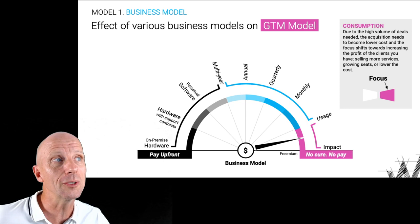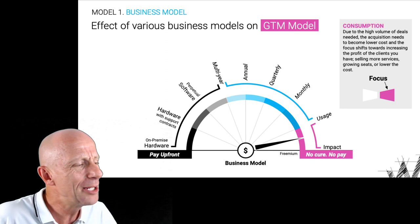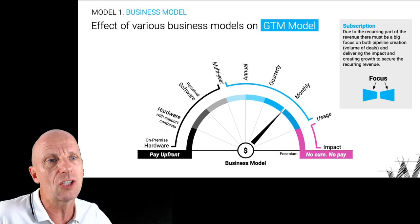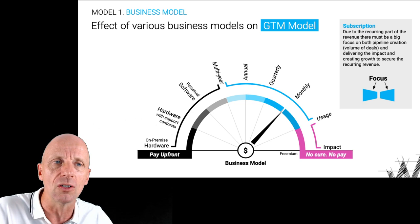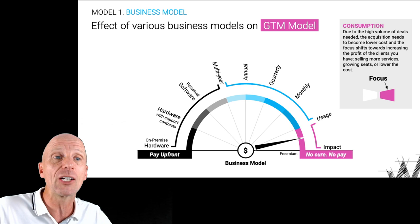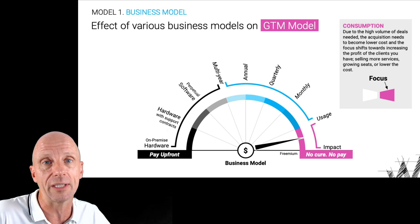As we move to the consumption model, the focus shifts again. In the ownership model, it's a maniacal focus on winning deals. In the subscription model, a balanced focus on winning deals and achieving impact. In the consumption model, we often use product-led growth to acquire the client, but then we must deliver — because if we're not delivering, we're going to see them churn. There should be a maniacal focus on making sure we deliver what we promised, and we should even pick our clientele based on whether we can actually deliver that.